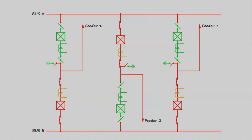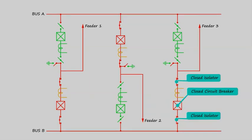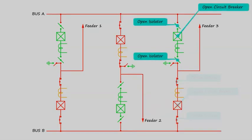When the circuit breaker associated with the particular bus is closed after closing its associated isolators, the feeder is connected to that particular bus. At the same time, the isolators and circuit breaker of that feeder associated with the other bus are in open condition.